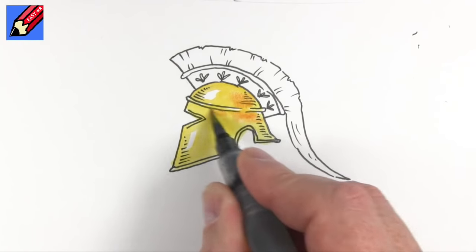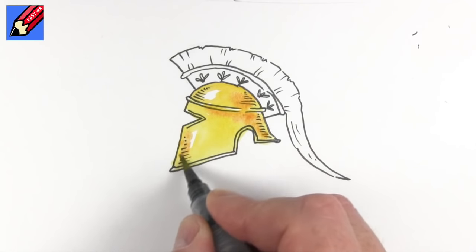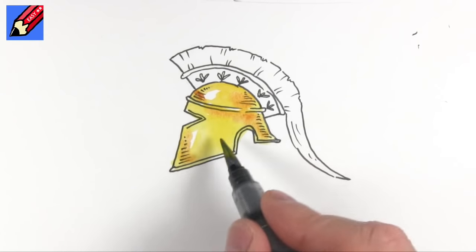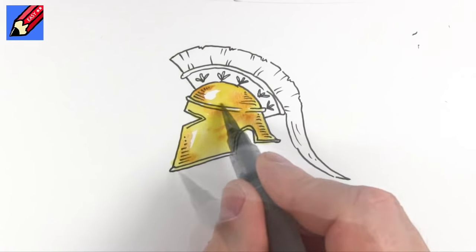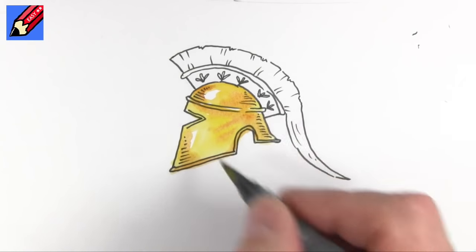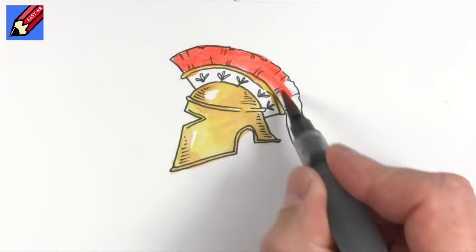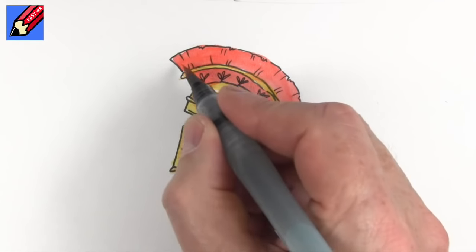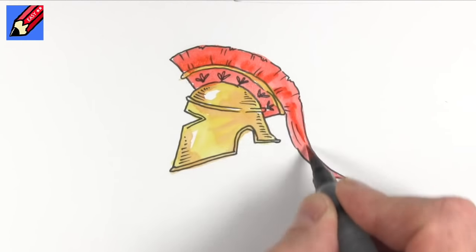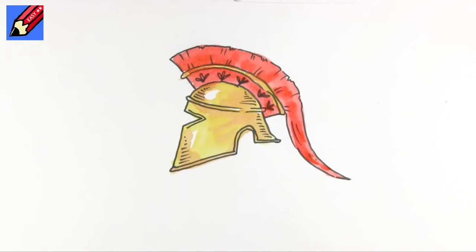Then I'm going to quickly color this in red, and then with a little bit of a darker red we can just add some shadow in there as well. And there you go, how to draw and paint a hoplite helmet, real easy.